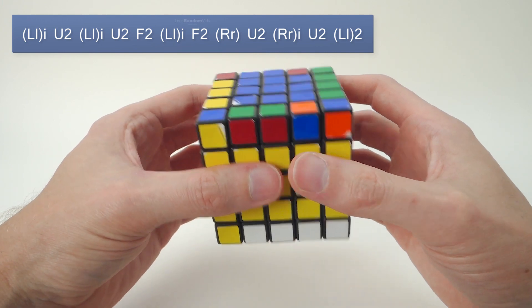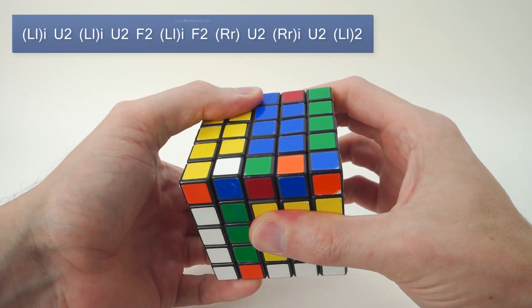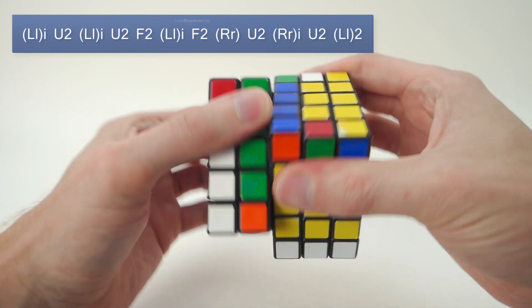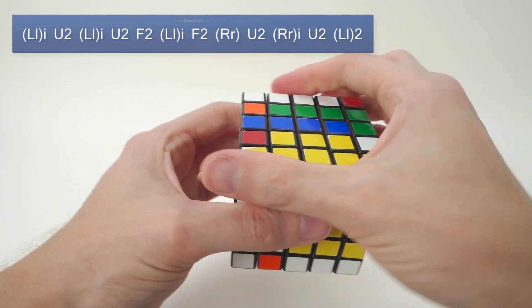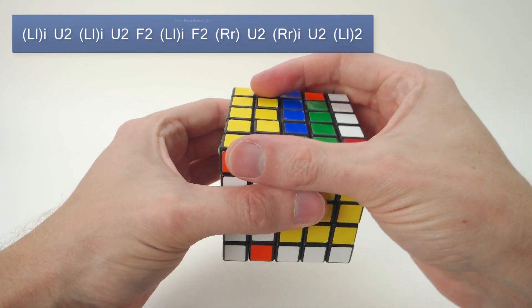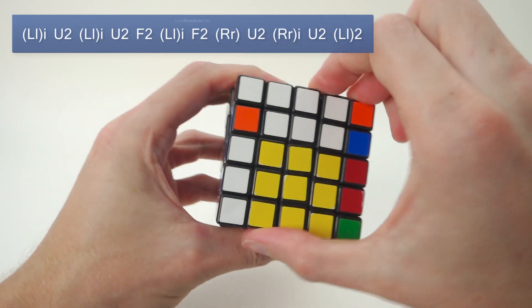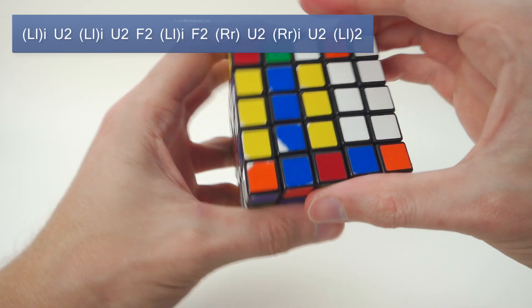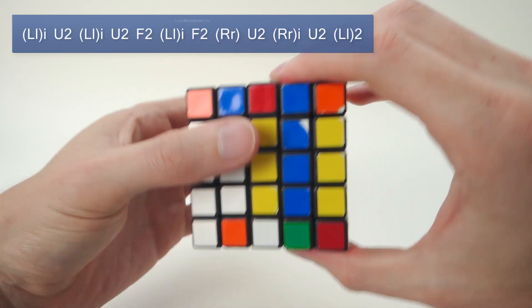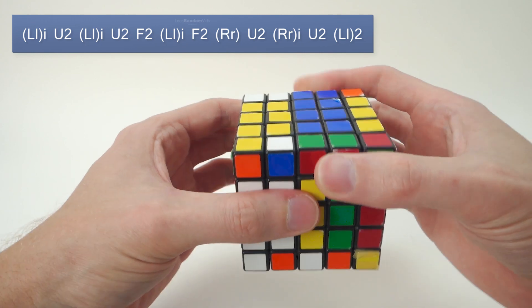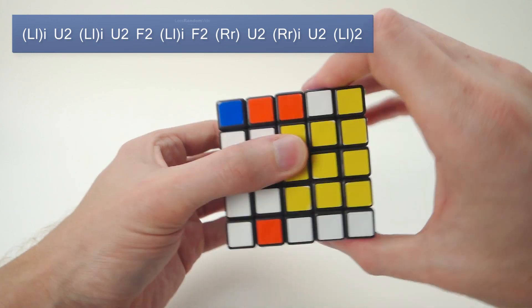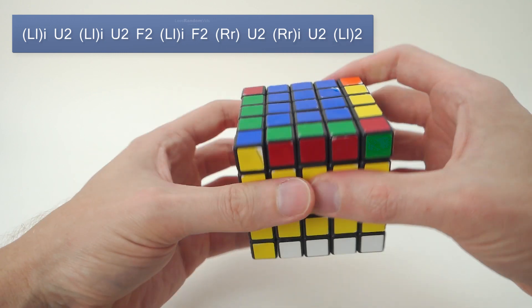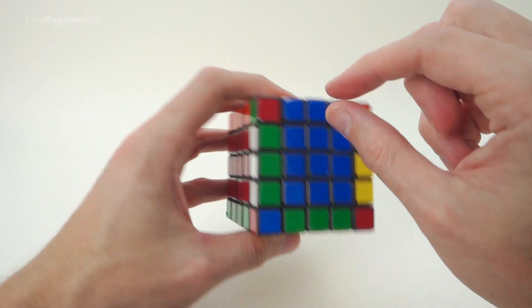So let's do that. So it's double L in brackets i or inverse, u2, double L i, u2, f2, double L in brackets i, f2, double R, u2, double Ri, u2, double L 2. And that has corrected the parity error of these two edges.